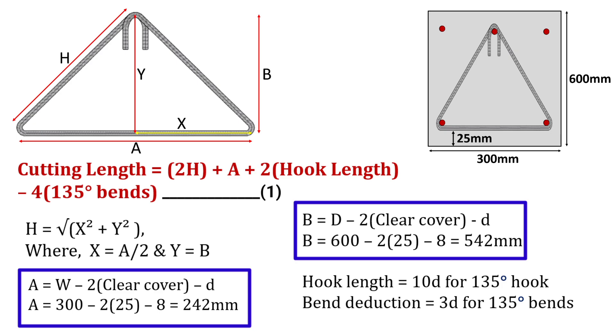Since we are using 135 degree hooks, the hook length will be equal to 10D, where D is the dia of the bar. And bend deduction will be equal to 3 times D for 135 degree bends.